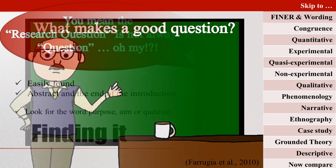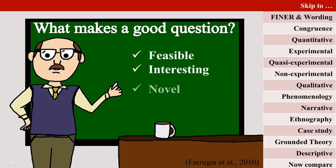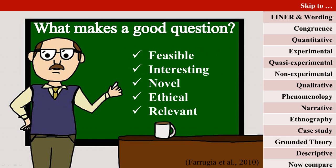Once you have found the question, assess if it is a good question to ask. To remember the criteria for a good question, some suggest the FINER criteria: feasible, interesting, novel, ethical, and relevant. Does it sound important, relevant, and interesting? The entire literature review should be designed to convince you that it is.